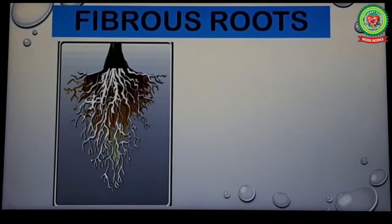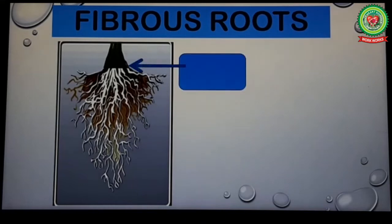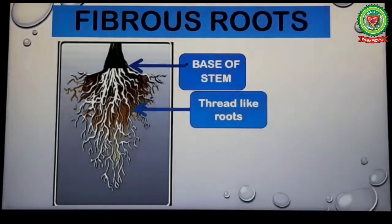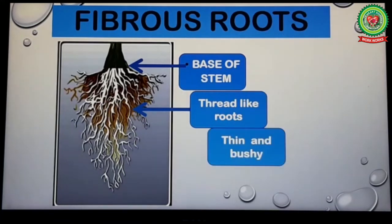Now look at this picture. This part is the base of the stem. From there, many thread-like roots come out, and these are thin and bushy in appearance.